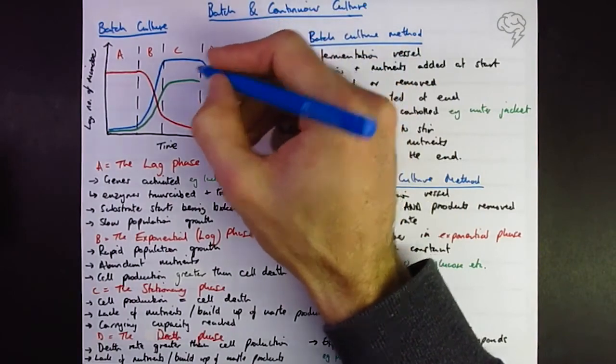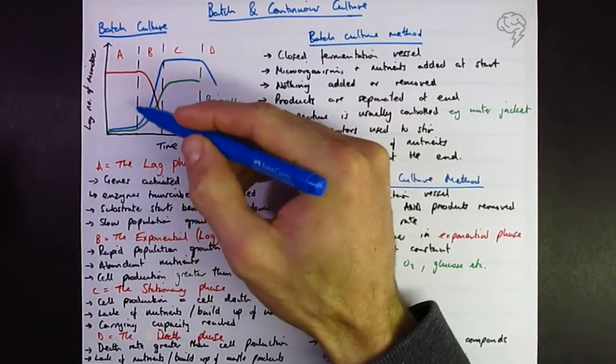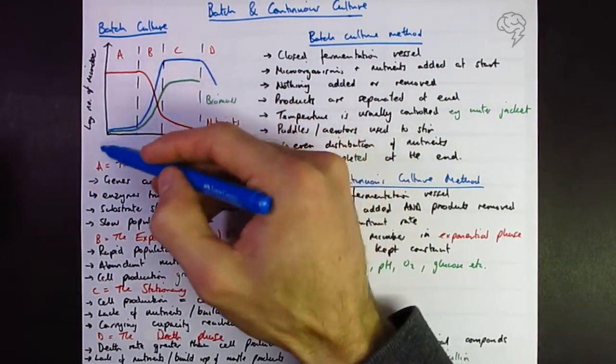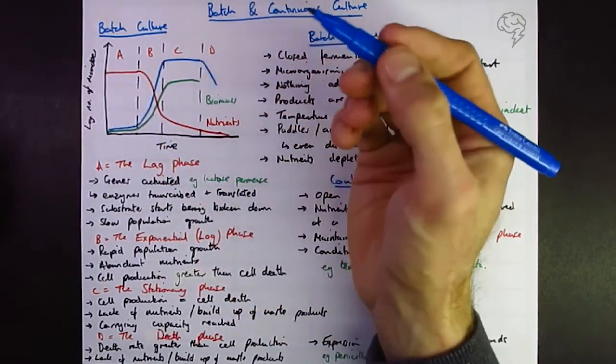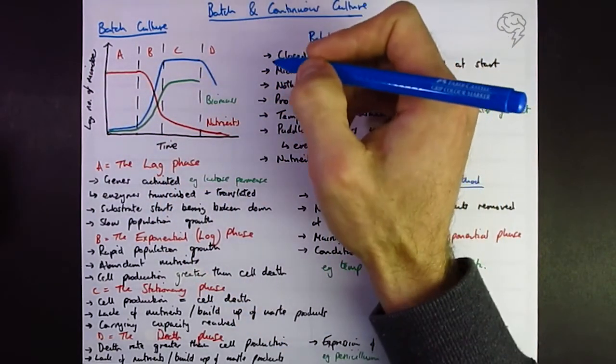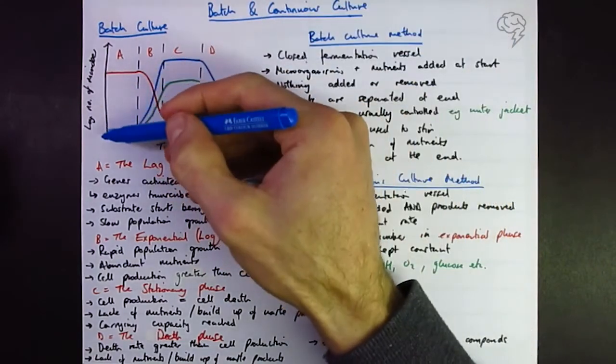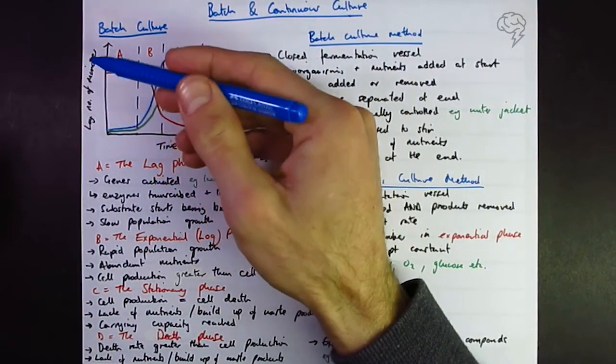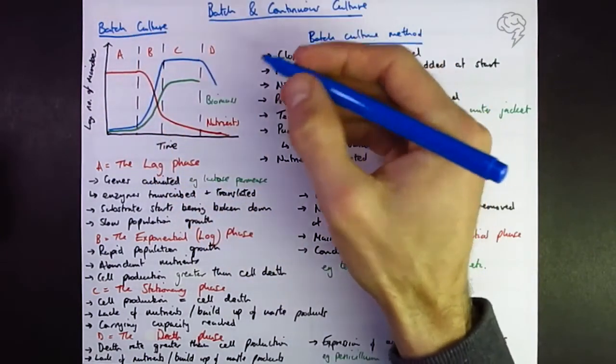This is the log number of microorganisms. This is a logarithmic scale because they're increasing, doubling effectively each time. This isn't a linear scale, it's a log scale, but I'm sure they're not going to ask too many questions on this. So it would go one, ten, hundred, thousand, ten thousand, etc. would be this scale here.